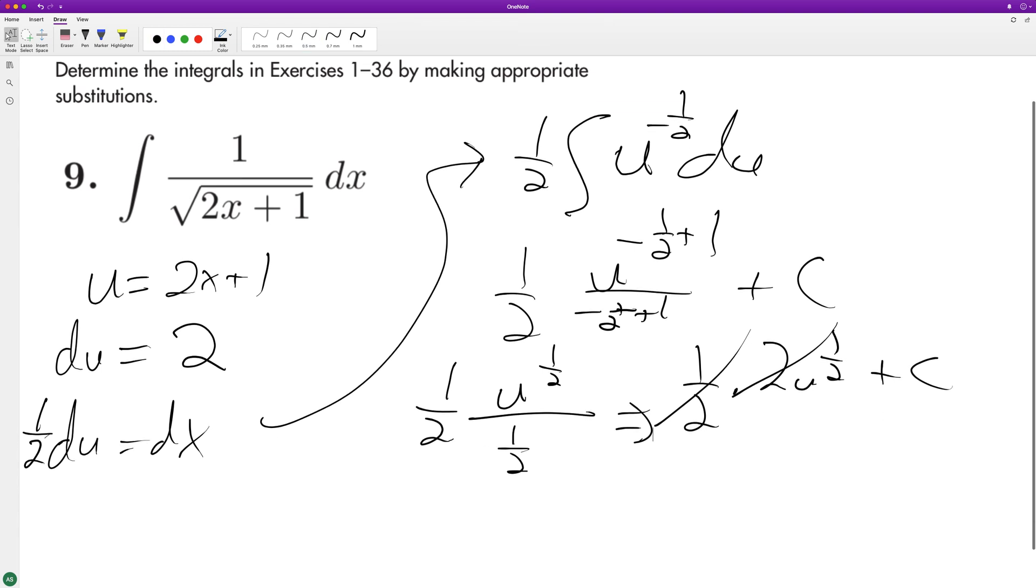Simply u raised to the one half plus c. And subbing back in, something raised to the one half is the same thing as the square root sign, so square root of 2x plus 1 plus c. And that's it. I hope this problem helped you out. Appreciate you taking time to watch, and have yourself a great day.